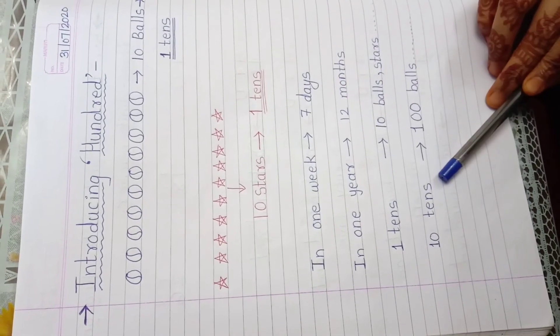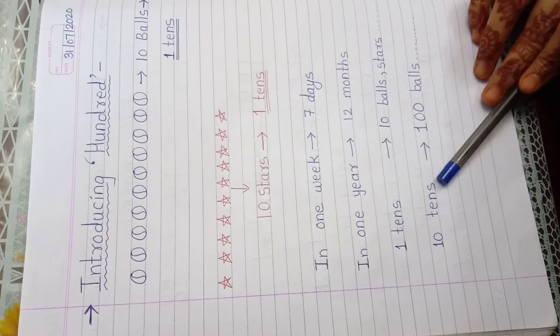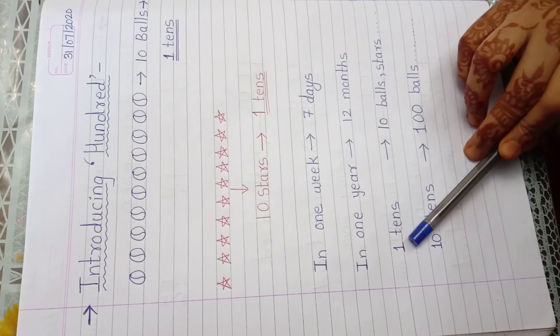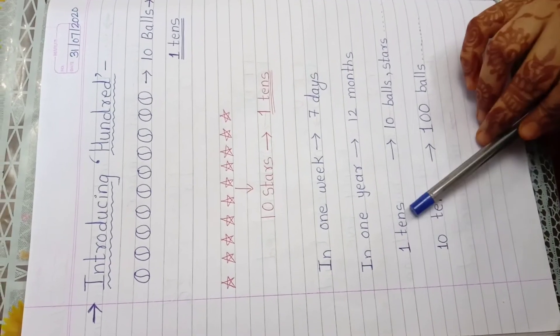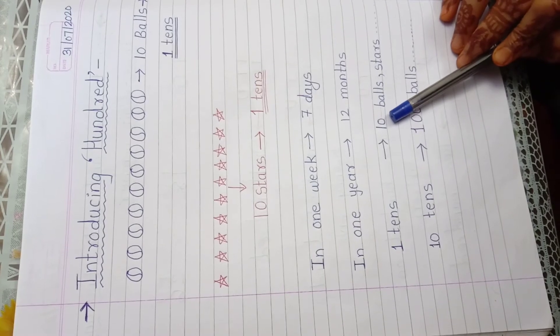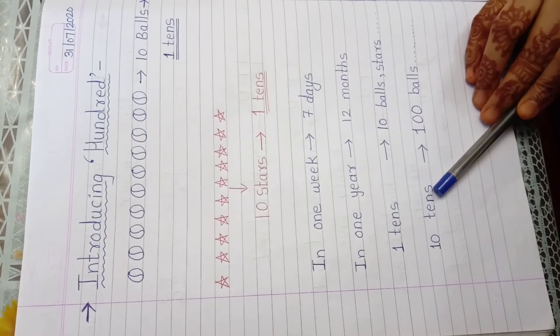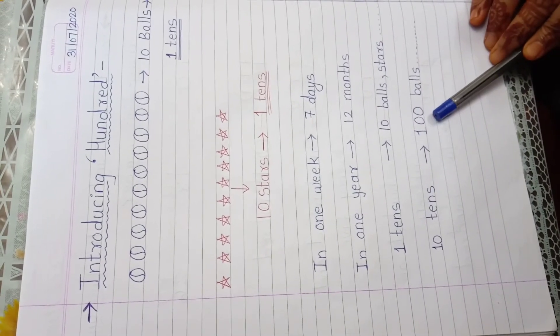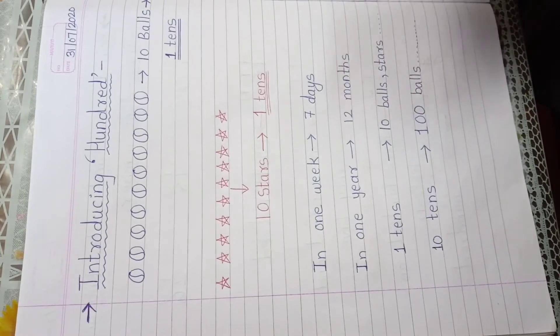Now 10 tens means how many balls? 10 tens. For example, see here, 1 tens means how many balls are there? 10 balls. Okay. So if you have 10 tens, then how many balls are there? 100. Obviously, 10, 20, 30.